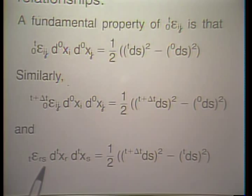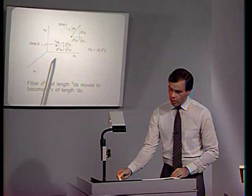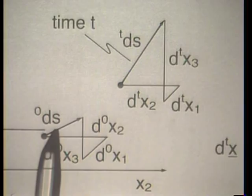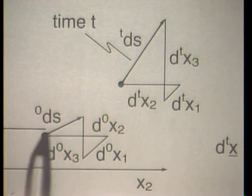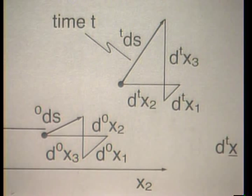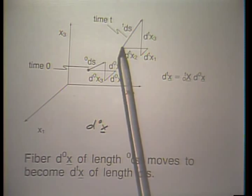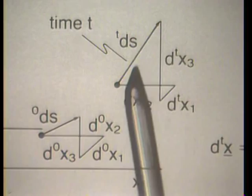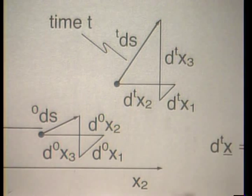Let's look at what this relationship means physically. We have our stationary coordinate frame x1, x2, x3. At time 0, we have a material fiber of length 0ds, with components forming vector d0x. This material fiber moves from time 0 to time t to a new configuration, with new components dTx2, dTx1, dTx3. There is a relationship between the new components and the original components of the material fiber, and here the deformation gradient enters.